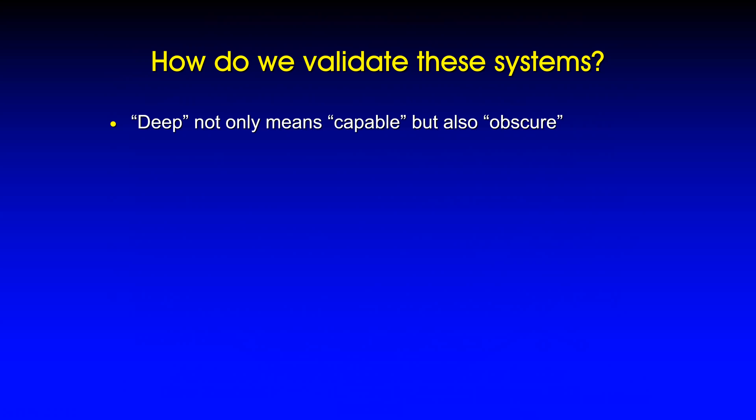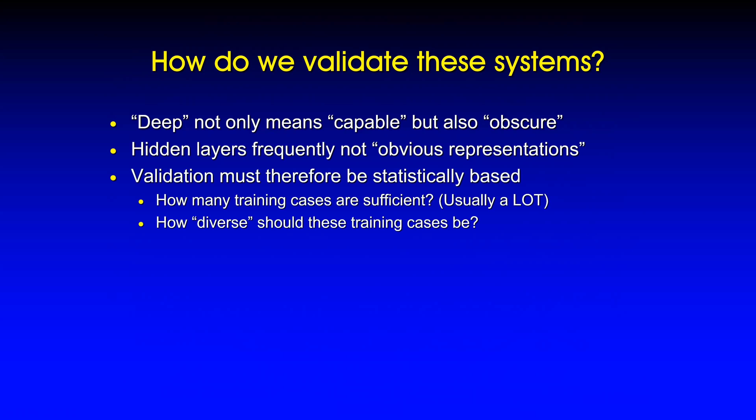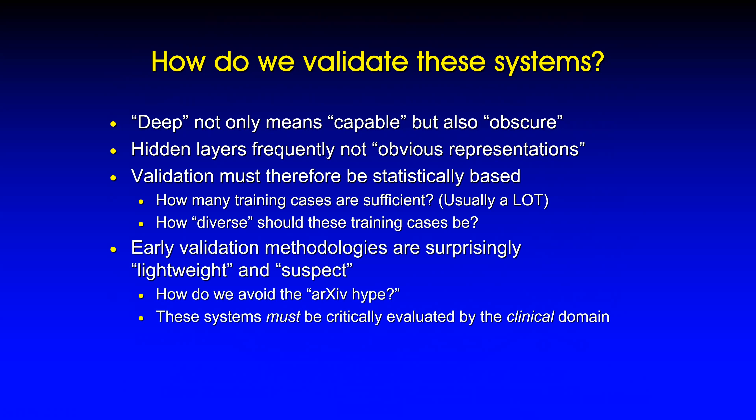Deep is an apt word: it means not only very capable — these systems are absolutely very capable — but also obscure. It's a black box for most of us. Deep learning systems don't have a preconceived model; that's its advantage. You don't have to be clever — you replace cleverness with lots of vetted data. Just like statistical regression, it will come up with the model on its own, but the underlying 'why it works' will almost always be obscure, and that means validation has to be statistically based.